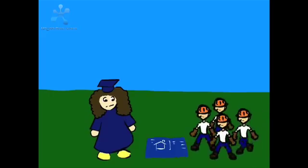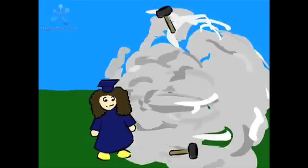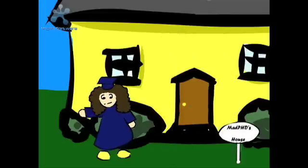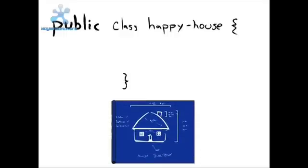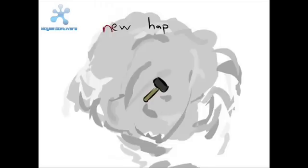Let's try that again. New HappyHouse! Much better. Objects work in the same way. The class definition is the blueprint for an object — it is not the actual object. An object, like the house, does not actually exist and cannot be used until it is created using the new operation.